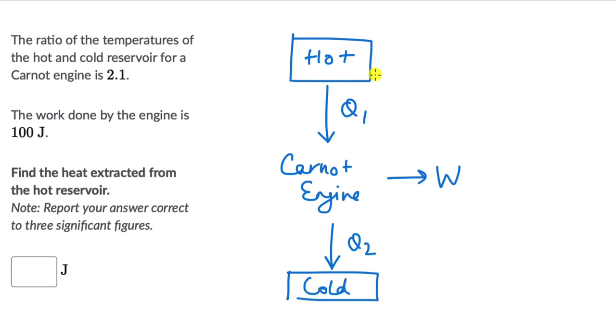We can say that the hot reservoir is at a temperature TH and the cold one is at TC. Now we need to understand the heat extracted from the hot reservoir. So we need to figure out Q1, this is what we need to understand.